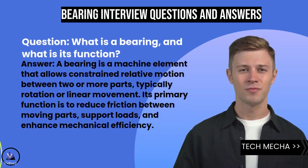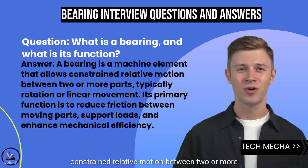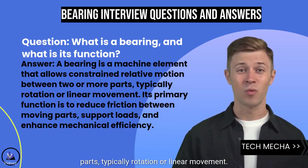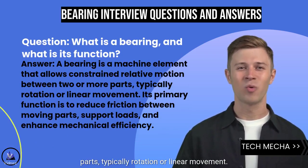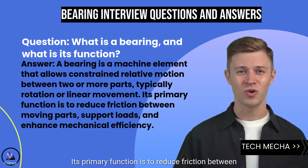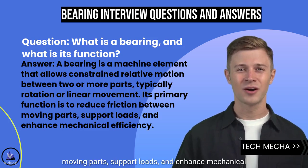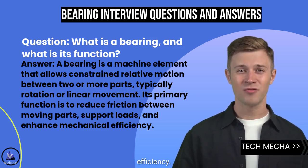What is a bearing? A bearing is a machine element that allows constrained relative motion between two or more parts, typically rotation or linear movement. Its primary function is to reduce friction between moving parts, support loads, and enhance mechanical efficiency.